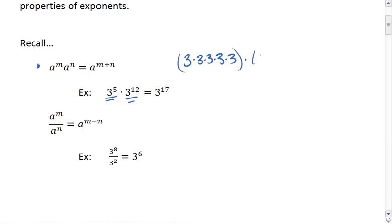3 to the 12th means repeatedly multiplying by 3 twelve times. All in all, we're repeatedly multiplying by 3 five plus 12, which is 17 times.